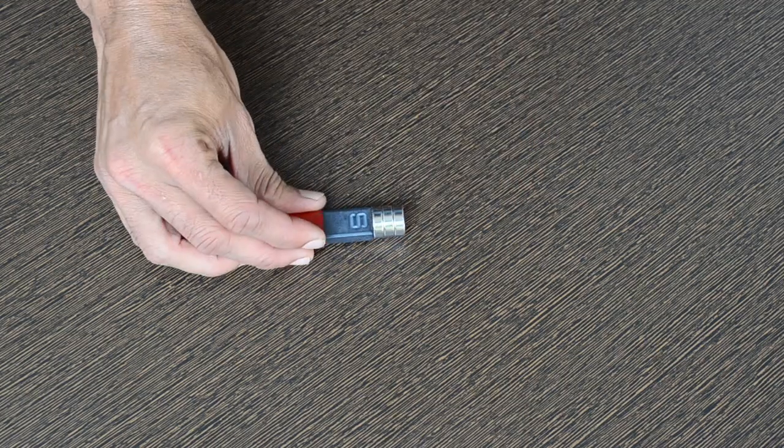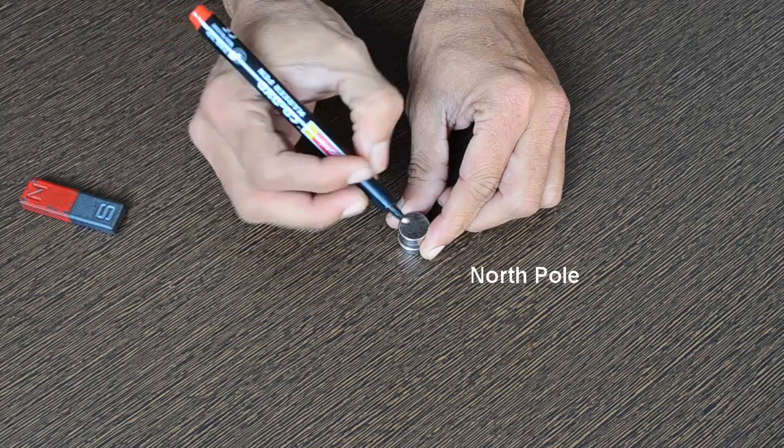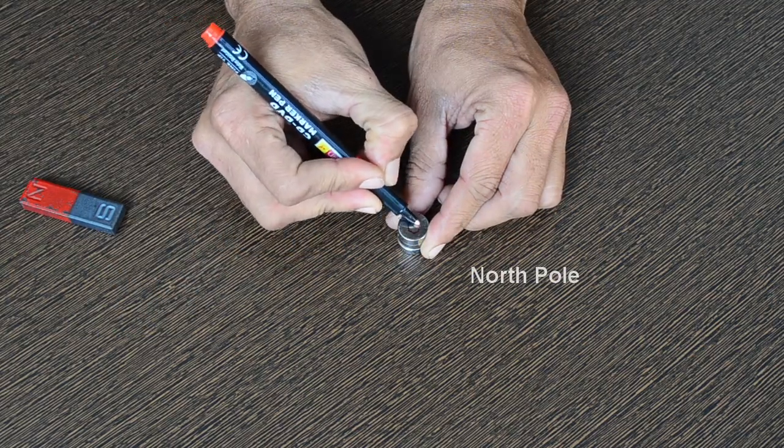Poles are identified with the help of a bar magnet. North pole is marked with a big red dot and taped as red.